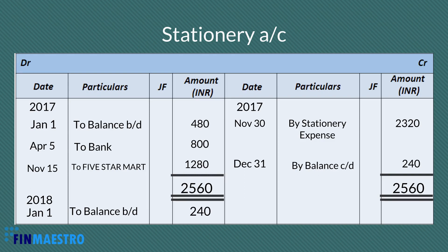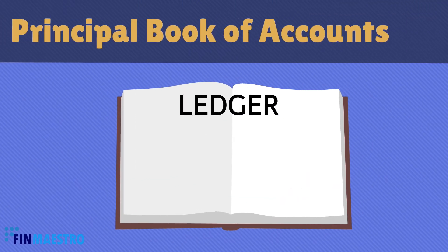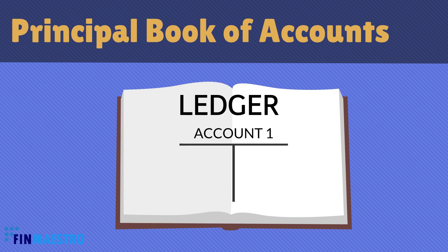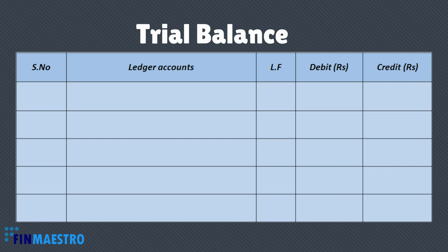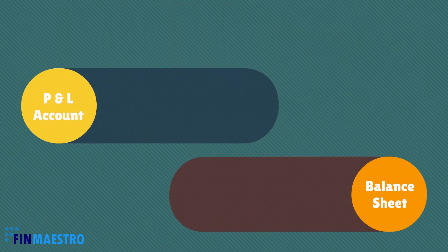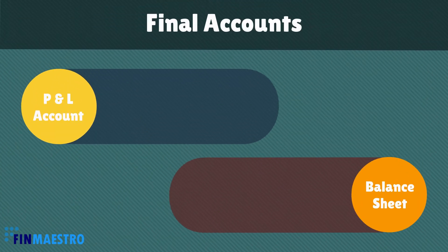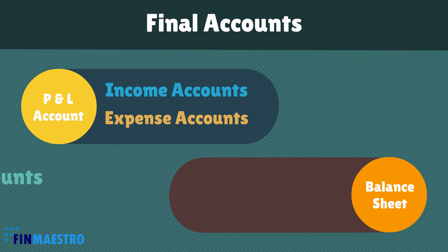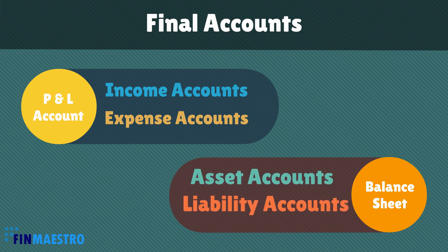So this is how we prepare and balance the ledger accounts. A ledger is known as the principal book of accounts because it shows all the details about transactions pertaining to a particular account. After balancing the ledger at the period end, each ledger balance will be listed in the trial balance to ensure the arithmetical accuracy of the accounts. While preparing the final accounts, all income and expenses accounts are moved to the profit and loss account, and all assets and liabilities are moved to the balance sheet.